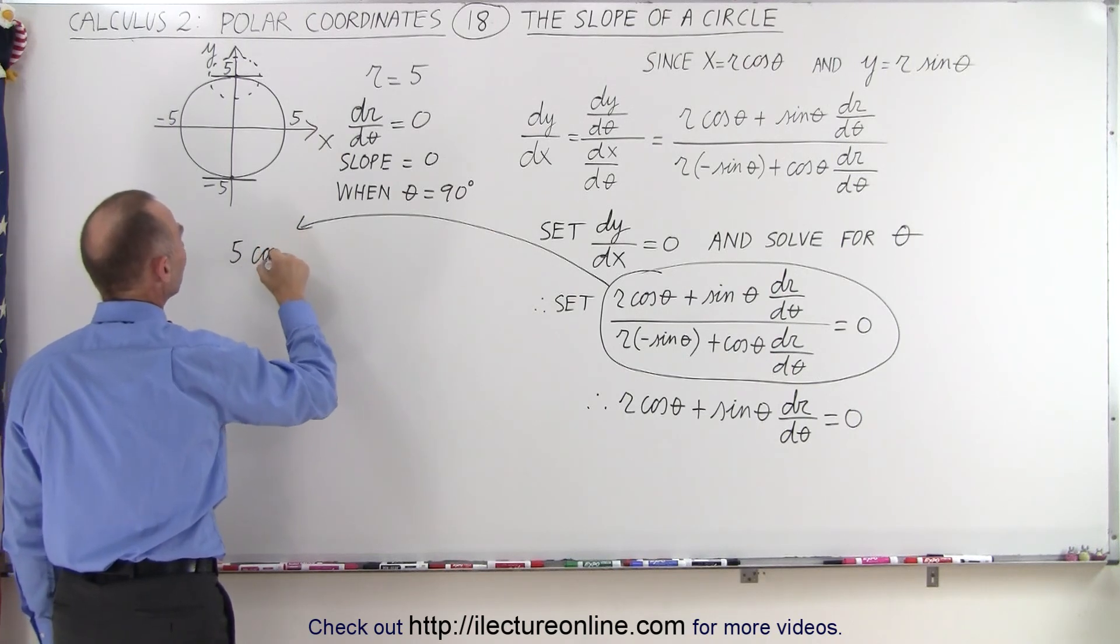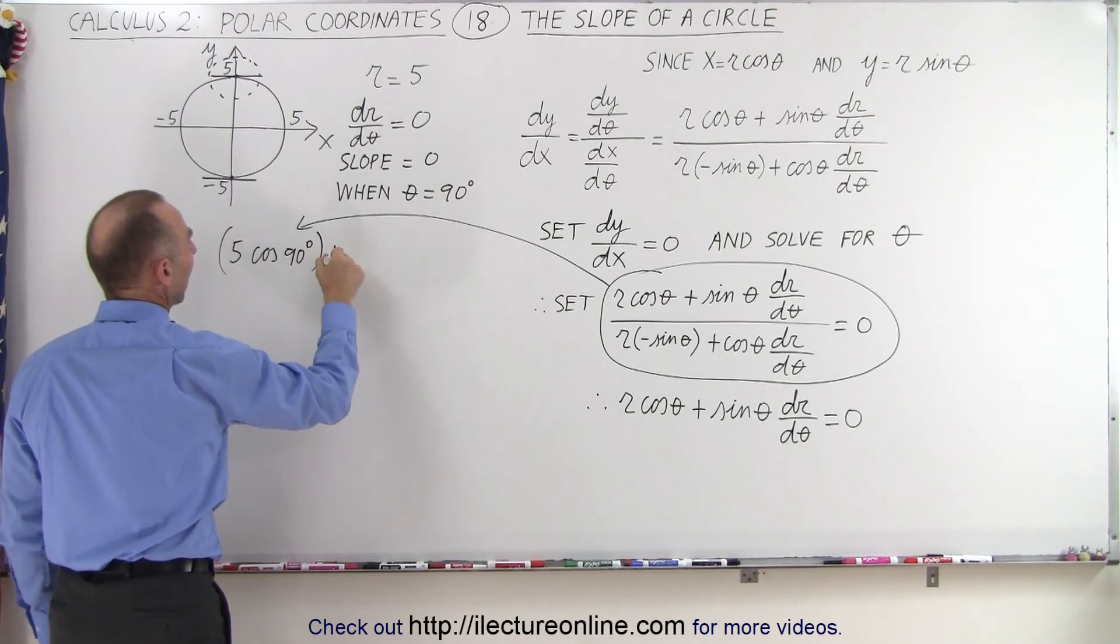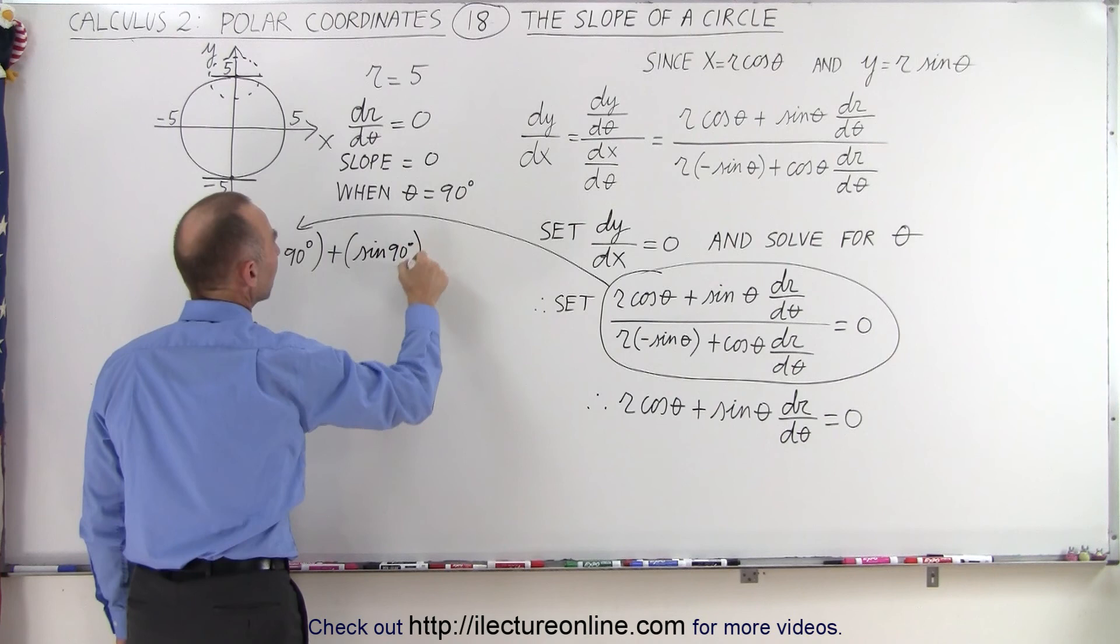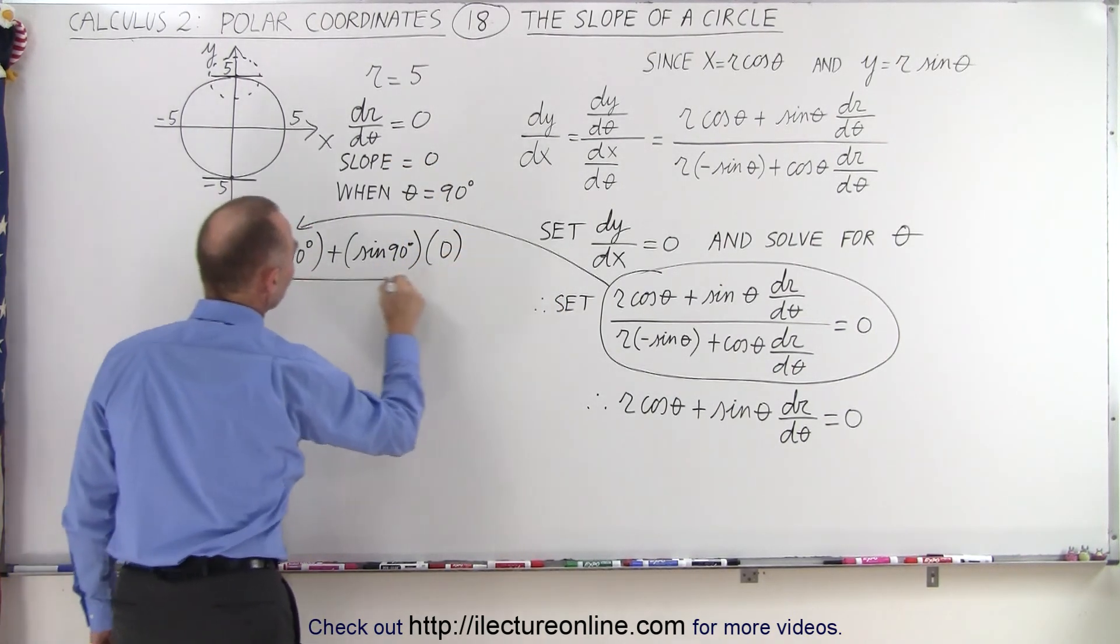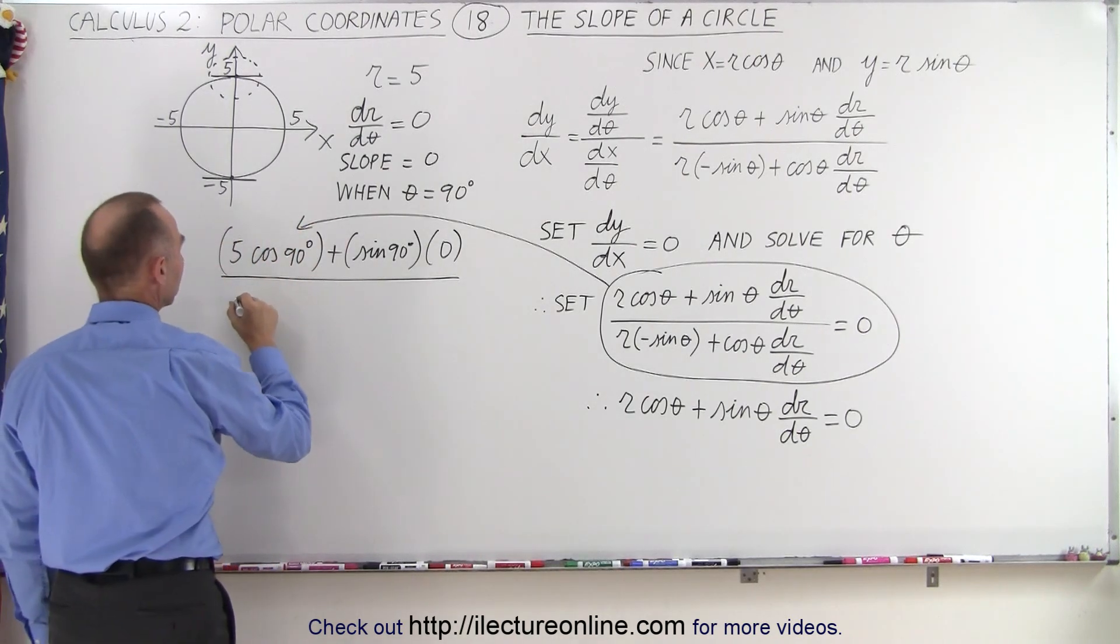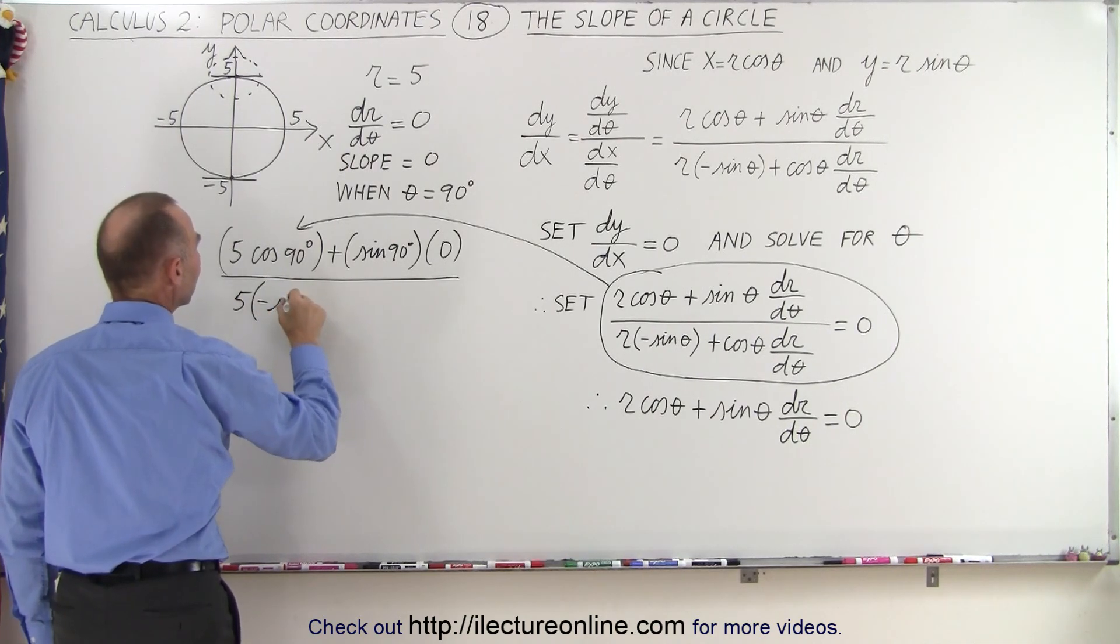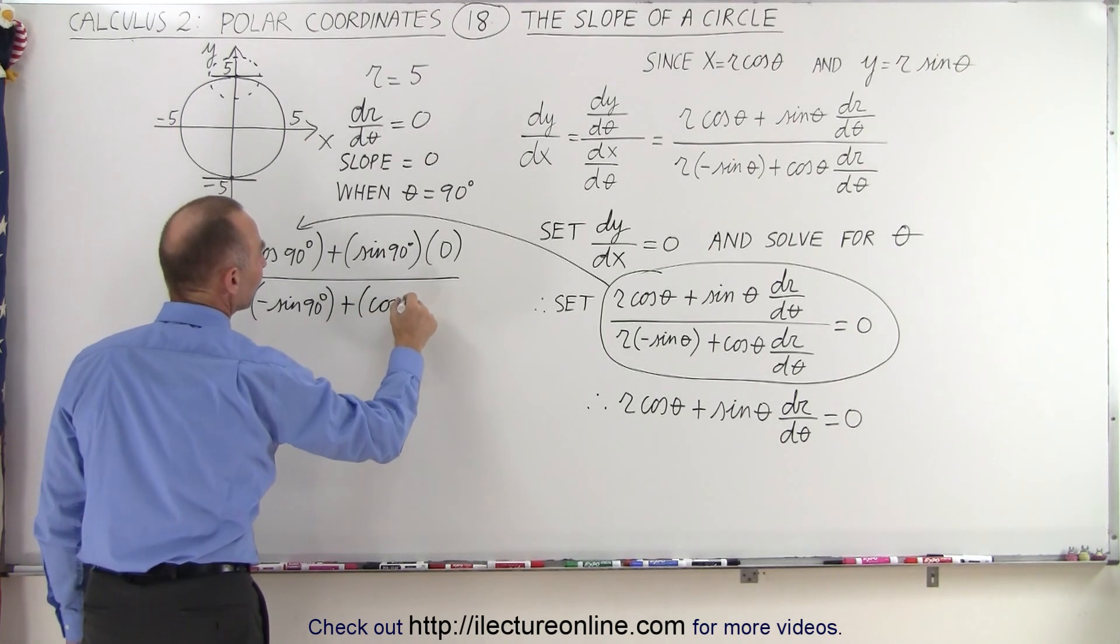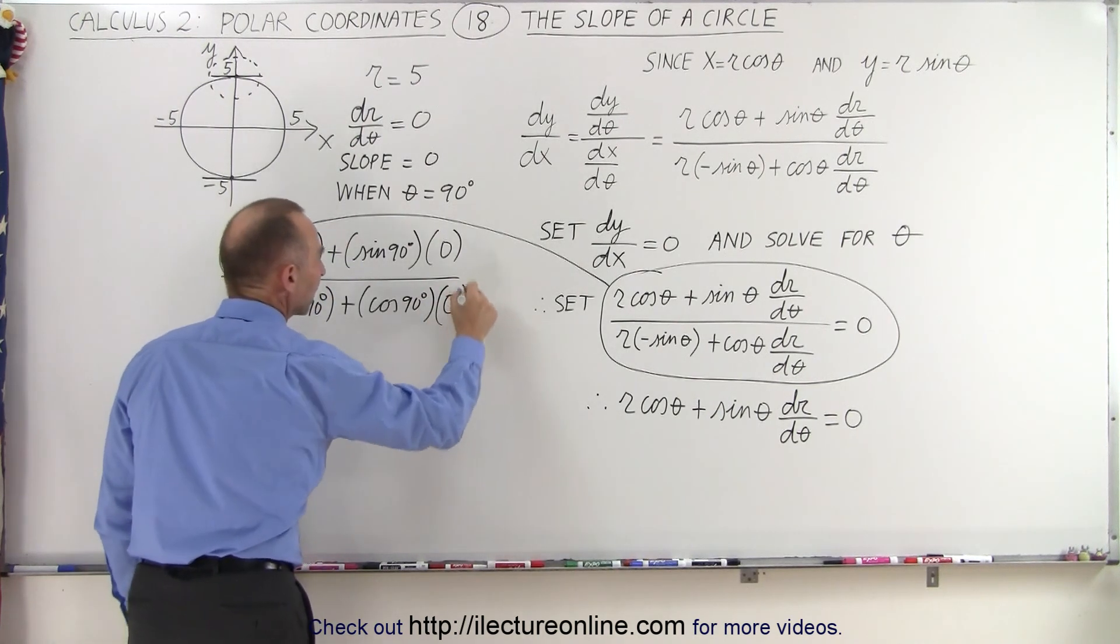So 5 times the cosine of 90 degrees, and we add that to the sine of 90 degrees times dr/dθ, which is equal to 0, all divided by r. In this case, r would be equal to 5, 5 times the negative sine of 90 degrees, plus the cosine of 90 degrees times dr/dθ, which is 0.